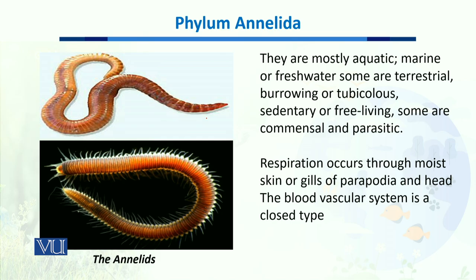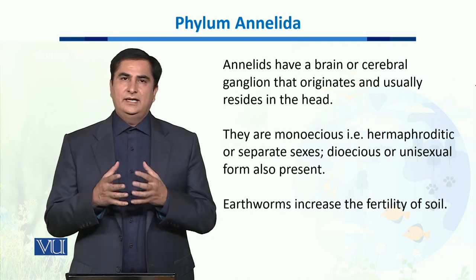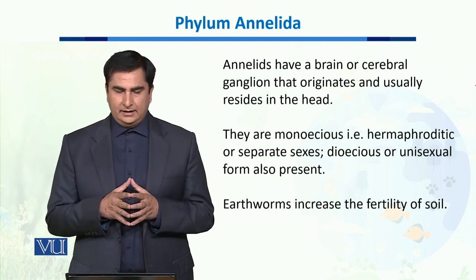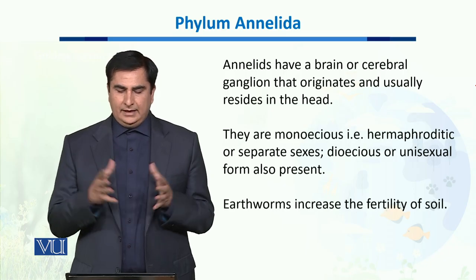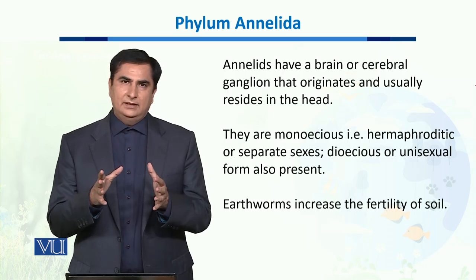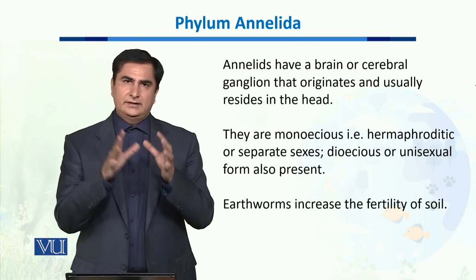Alternatively, they could have gills or parapodia and respire through those gills as well. Annelids also possess a closed blood circulatory system. The cerebral ganglion, or brain, of Annelida organisms originates from the head and stays in the head.